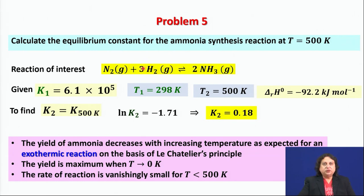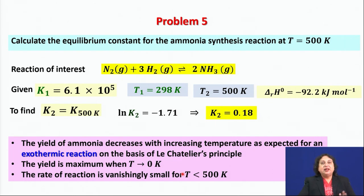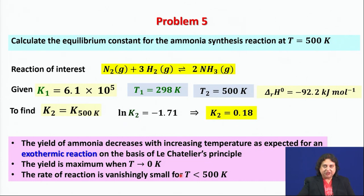The conclusion is that since this is an exothermic reaction, working at lower temperature increases the yield. However, thermodynamics does not address the rate of reaction. As temperature is lowered, the equilibrium constant increases, but the rate of reaction becomes vanishingly small. Experimentally, below 500 Kelvin, one can wait hours or days with no conversion of nitrogen and hydrogen into ammonia.